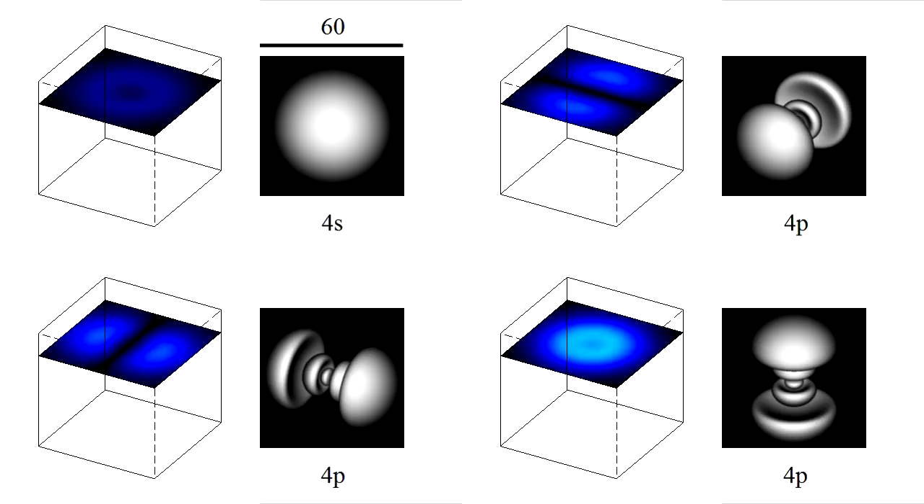The s and p orbitals are again similar to those of the n equals two and n equals three energy levels, but are larger and have more complicated structure. Note the scale bar is now 60 units long.